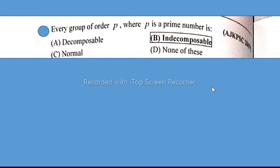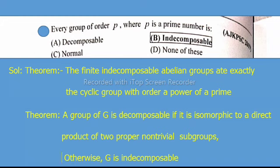is a prime number. Solution: Theorem 1 states that the finite indecomposable abelian groups are exactly the cyclic groups